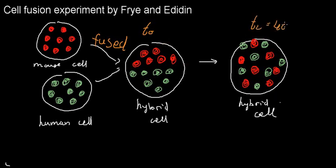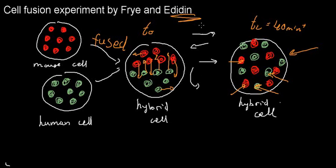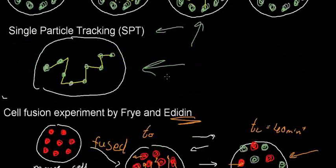After around 40 minutes, they noticed a free-diffusing pattern forming: mouse membrane proteins and human membrane proteins were mixing together. This necessarily means that membrane proteins can freely diffuse across the bilipid layer. This also supports the notion that proteins embedded in or associated laterally with the membrane can move around freely.